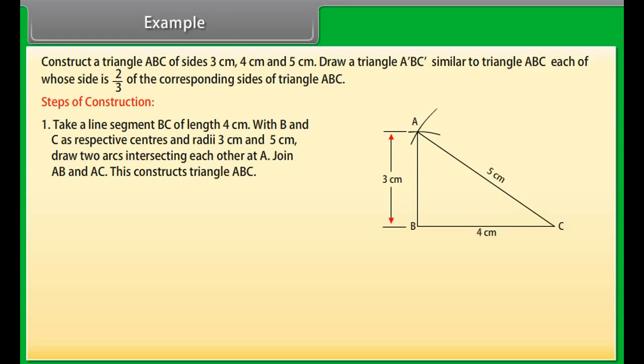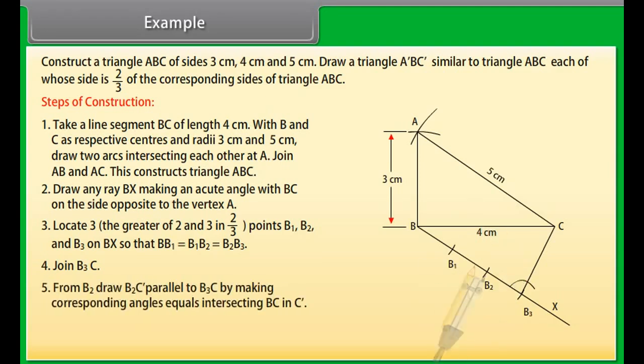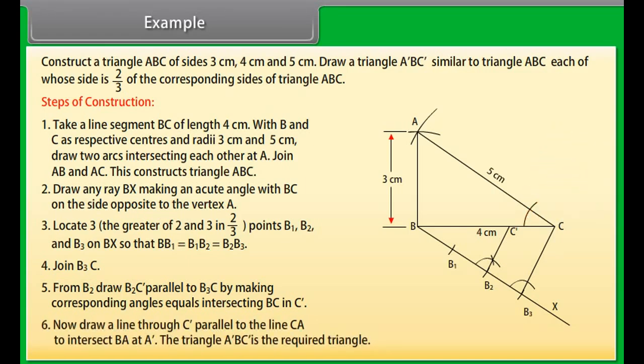Construct a triangle ABC of sides 3 cm, 4 cm and 5 cm. Draw a triangle A'B'C' similar to triangle ABC each of whose side is 2/3 of the corresponding sides of triangle ABC. Steps of Construction: Take a line segment BC of length 4 cm. With B and C as respective centers and radii 3 cm and 5 cm, draw two arcs intersecting each other at A. Join AB and AC. This constructs triangle ABC. Draw any ray BX making an acute angle with BC on the side opposite to the vertex A. Locate 3, the greater of 2 and 3 in 2 upon 3 points B1, B2 and B3 on BX so that BB1 equals B1B2 which equals B2B3. Join B3C.